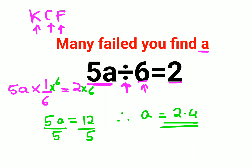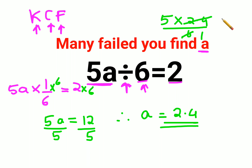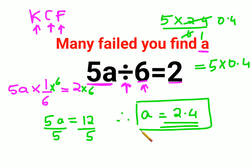Now let's verify this. So 5 into 2.4 upon 6 — that is what they are asking us in the LHS. We can cancel 6, leaving 0.4. So 5 into 0.4 is nothing but just 2. So the value of A as 2.4 is confirmed for this question.